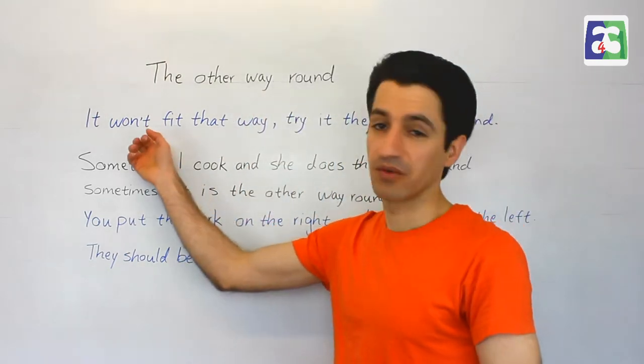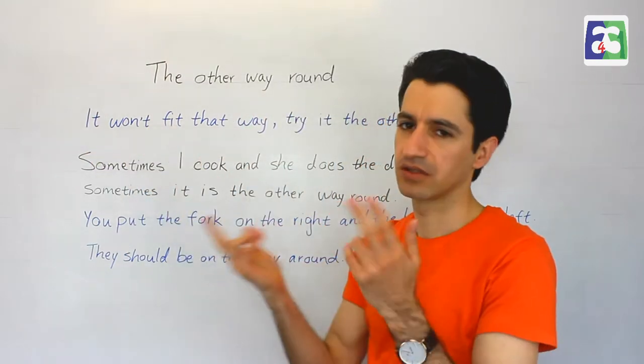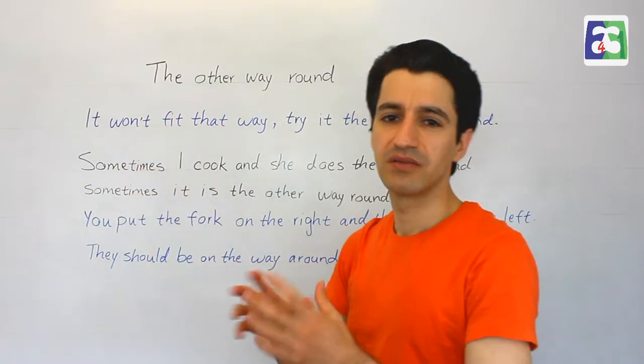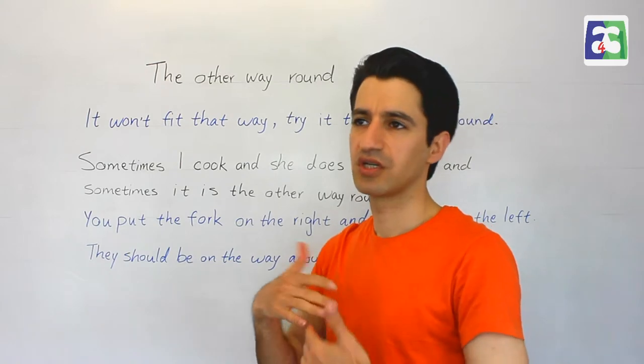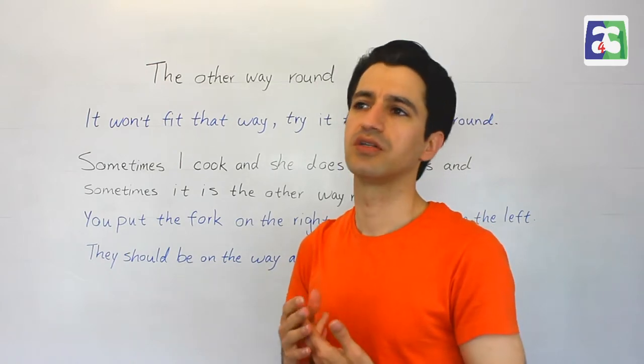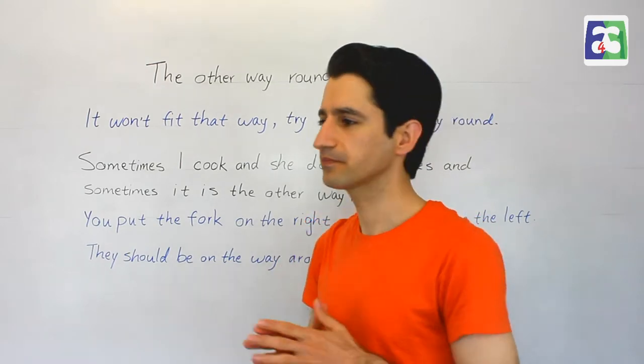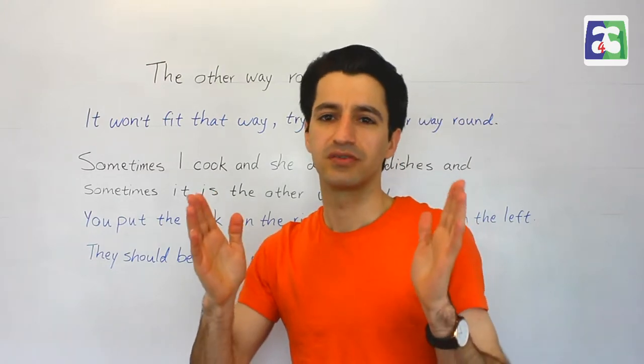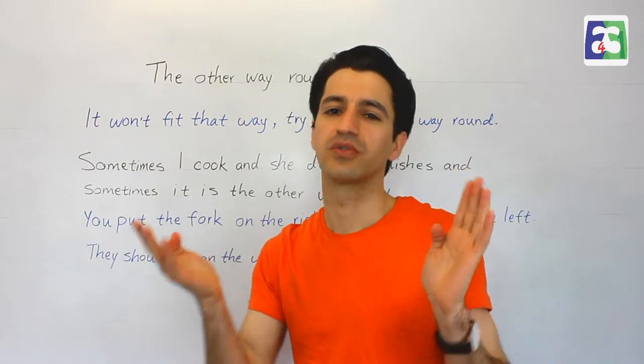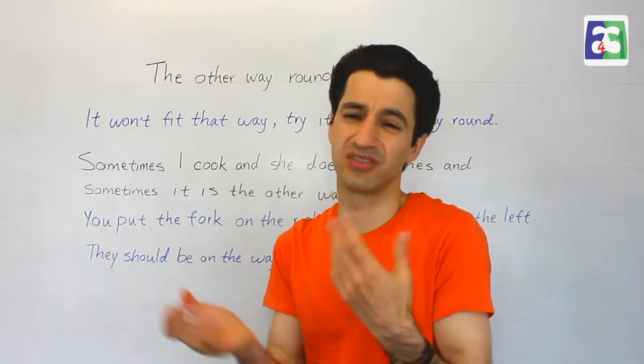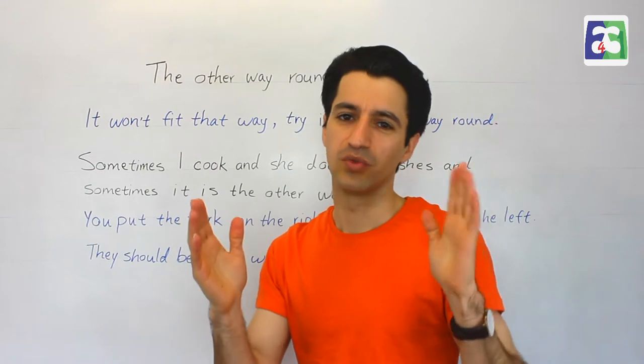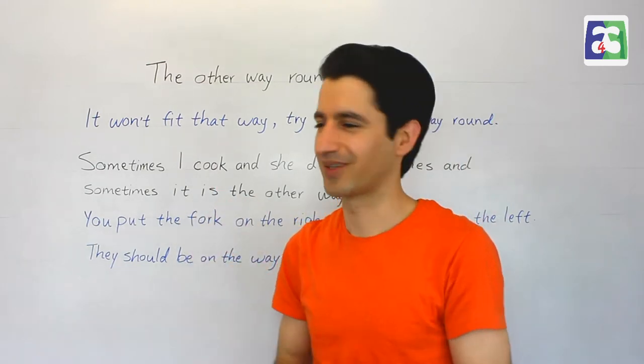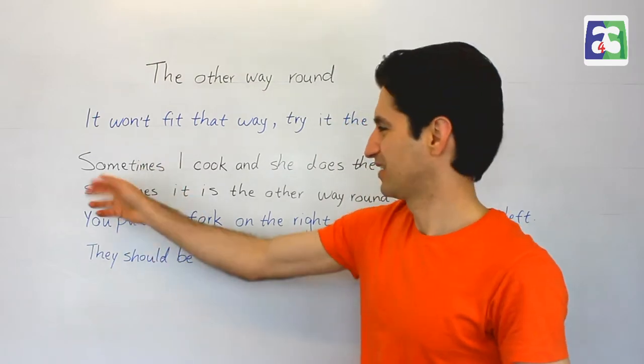Now, one is physical, like this, the other way round, left to right, right to left. The other one is when we change duties, when we change the position, when we change the role. One is playing the teacher, the other one is playing the student. Now we need to change the roles or go the other way round. Means change the roles. The one that was playing teacher is now playing student, and the other way round.